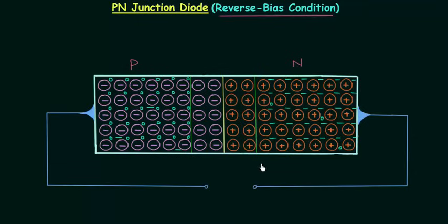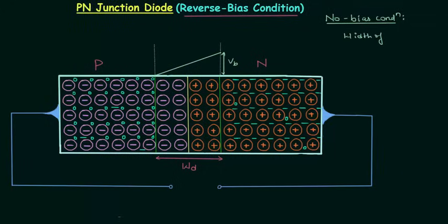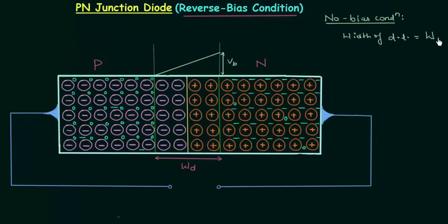This is the case of no bias condition because we are not applying any external voltage source across the two terminals. Let's say the width of the depletion layer is equal to W_D under the no bias condition, and the barrier potential is equal to V_B. So in no bias condition, the width of the depletion layer is W_D and the barrier potential, or built-in potential, is V_B.